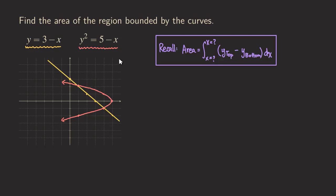Hello everyone, it's Wilson here. Today I want to redo one of the videos I have done before, which is to find the area of the region bounded by two given curves — one is a straight line and the other is a parabola. The reason I'm doing this is because one of the subscribers asked me to redo this problem in a different way.